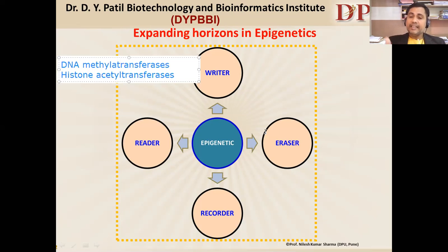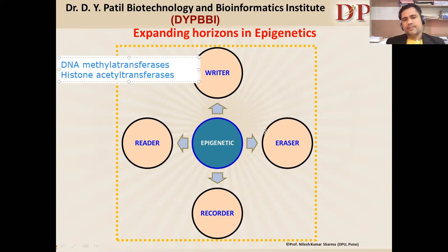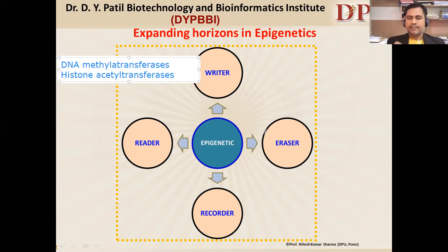These reverse enzymes are in the form of DNA demethylases and histone deacetylases — and these are called erasers. Their responsibility is to maintain a particular state of epigenetic structure.